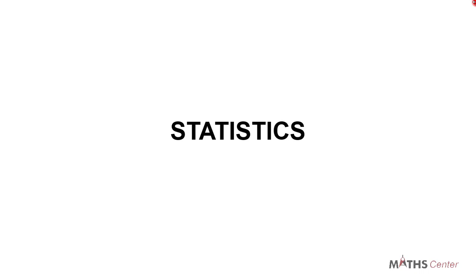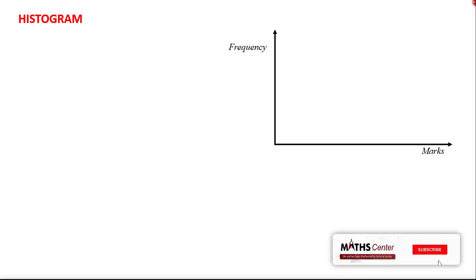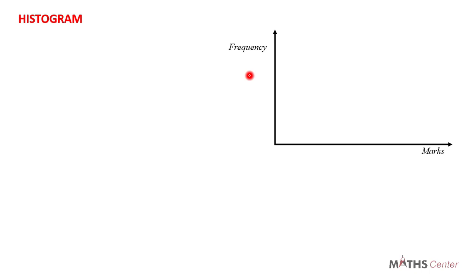Welcome back. We are still on the topic of statistics. In the previous video we learned how to draw a histogram for ungrouped data. In this video we are going to learn how to draw a histogram for grouped data. When drawing a histogram for ungrouped data, you have the marks on the horizontal axis and the frequencies on the vertical axis.